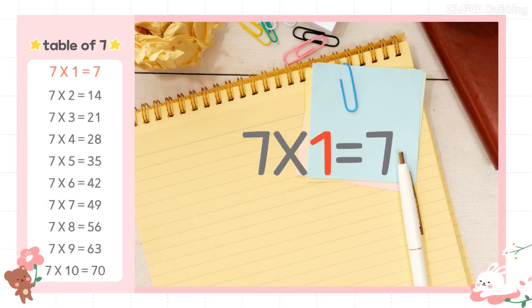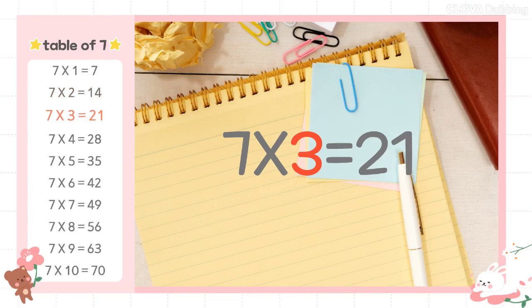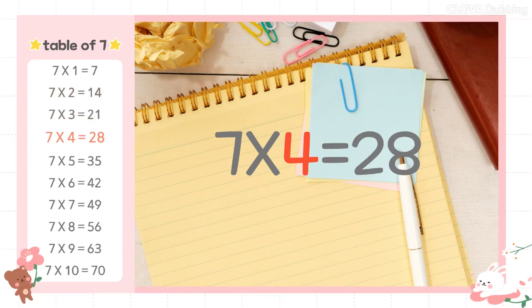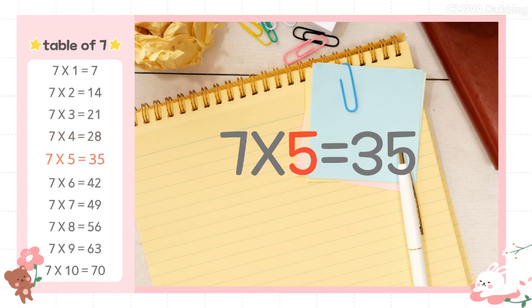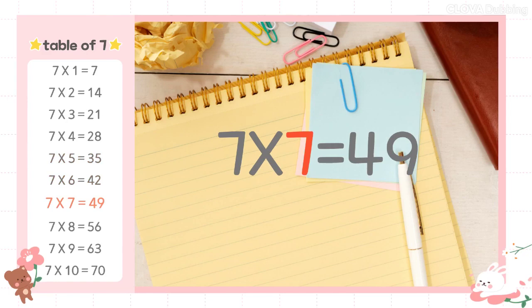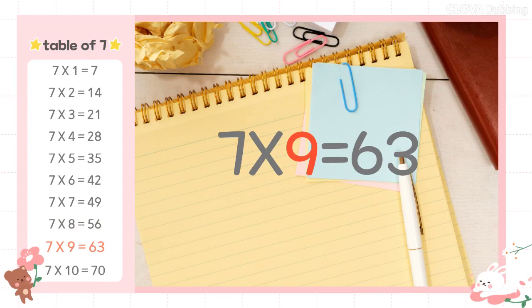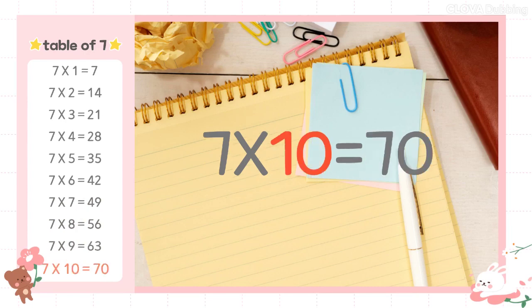7×1=7, 7×2=14, 7×3=21, 7×4=28, 7×5=35, 7×6=42, 7×7=49, 7×8=56, 7×9=63, 7×10=70